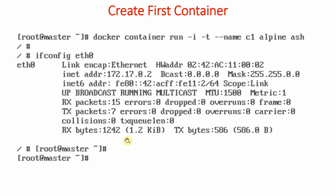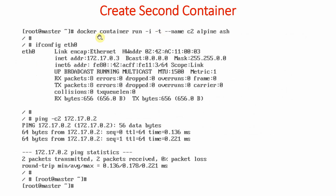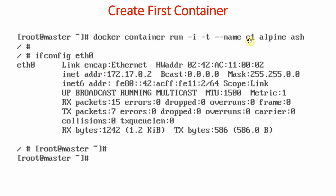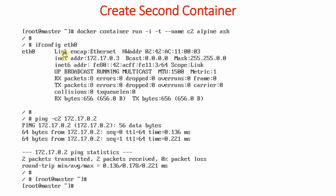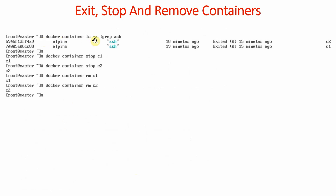We have created the first container. Now we want to create a second container. We run the same command: docker container run, interactive mode, attach terminal, naming this container c2, creating it from alpine, and specifying sh as the shell. Running ifconfig eth0 shows that the IP address is 172.17.0.3. Now we want to check connectivity between the two containers — c1 is already running and c2 is running — so from c2 we ping the c1 container, and as we can see it is pinging successfully.